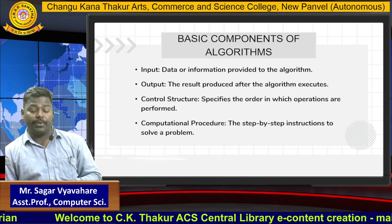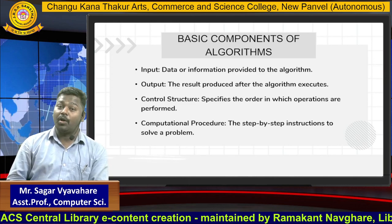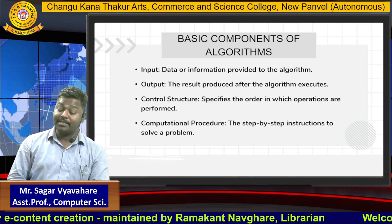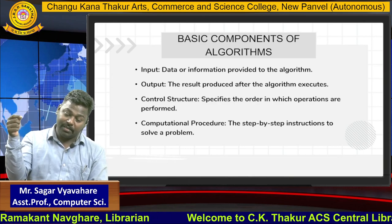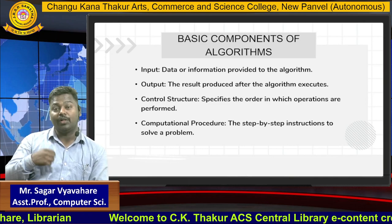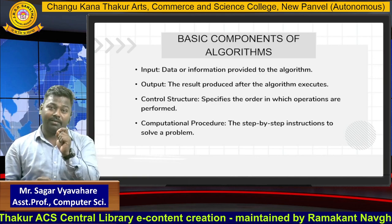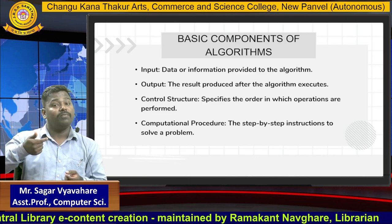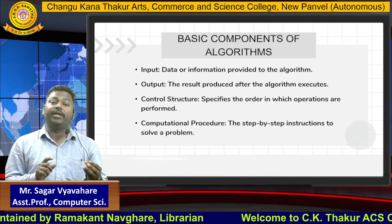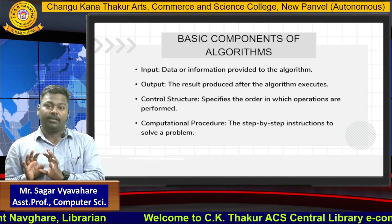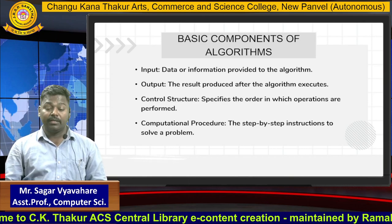The next component of algorithm is computational procedure. So what is computational procedure? It is a step-by-step instruction to solve a problem, just like the definition of algorithm. When you design an algorithm, we write steps — those written steps are nothing but the instructions we have written to solve the problem. Suppose you want to add two numbers: you will say take first number, then take second number, in the third step add number 1 and number 2, save it to number 3, and once the addition is saved, write print to display it. So the step-by-step instruction to solve the problem is nothing but this component of algorithm.